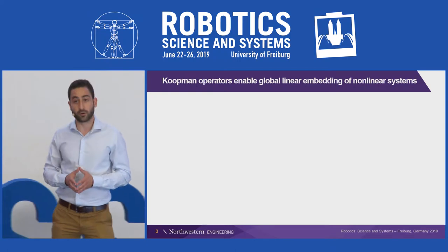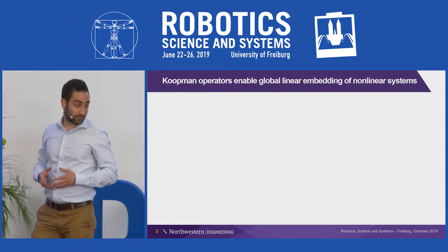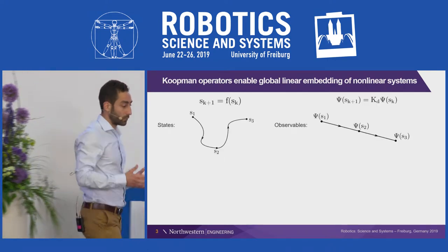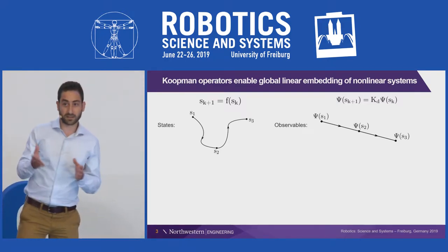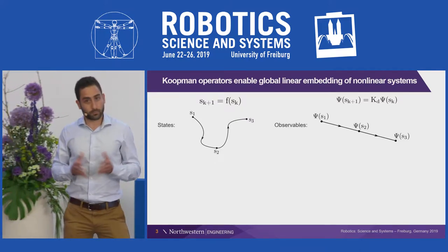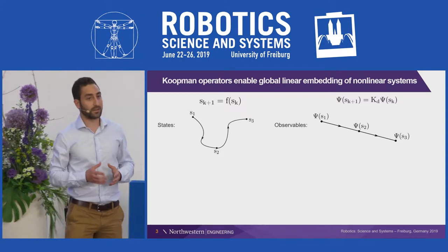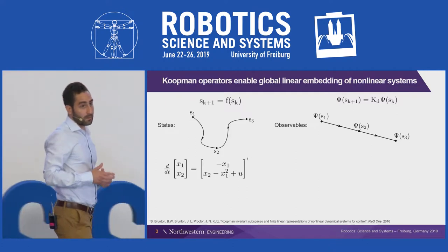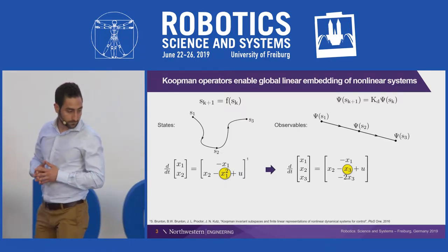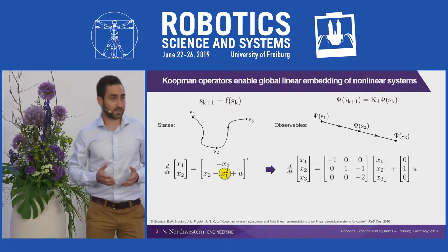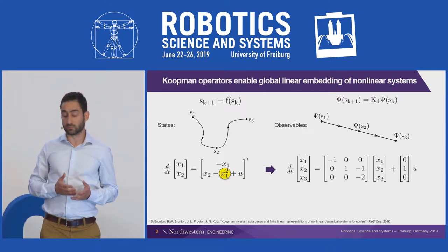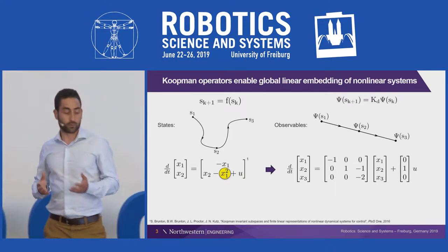Let me start by introducing Koopman Operators. These are infinite-dimensional operators that enable global linear embedding for non-linear systems. They do so by evolving non-linear functions of the state s, which are called observables, psi of s. They can also account for actuation by augmenting the observable functions with control terms. Although these operators are typically infinite-dimensional and prohibit any practical implementation, certain classes of systems do admit a finite-dimensional linear operator. For example, by making x1 squared a third variable, you get a linear representation of the non-linear system without any loss of accuracy.